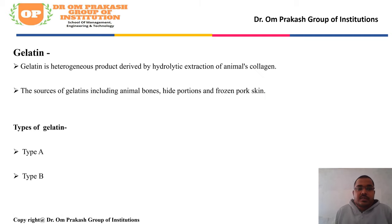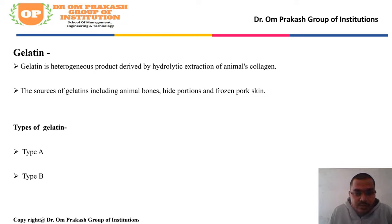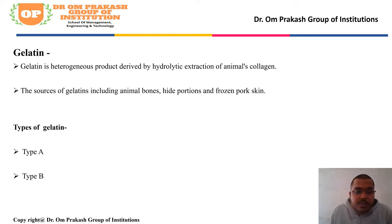What is gelatin? Gelatin is a heterogeneous product which is derived by hydrolytic extraction of animal collagen. The sources of gelatin include animal bones, hide portions, and frozen pork skin. These are the types of sources from which gelatin is available.